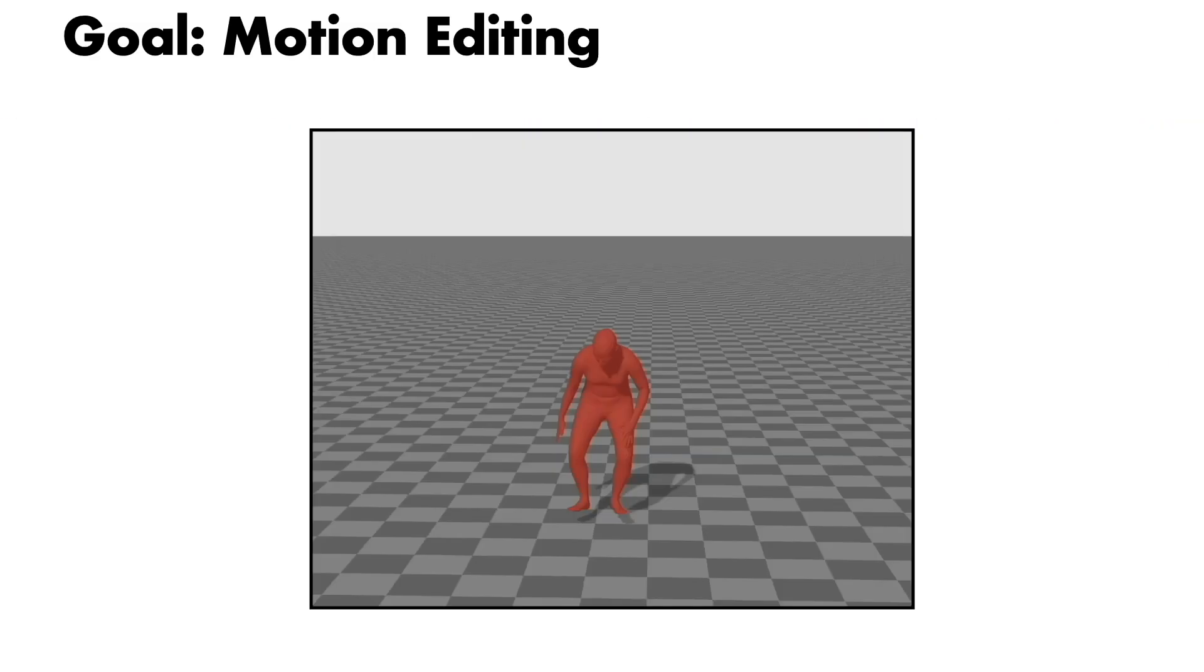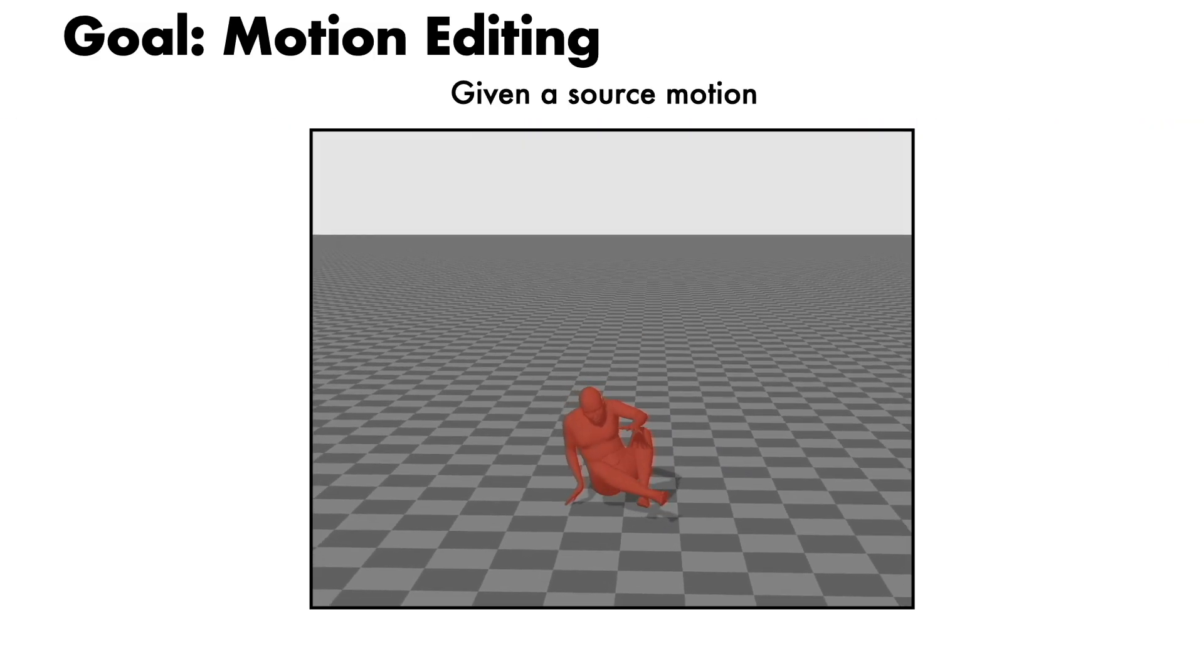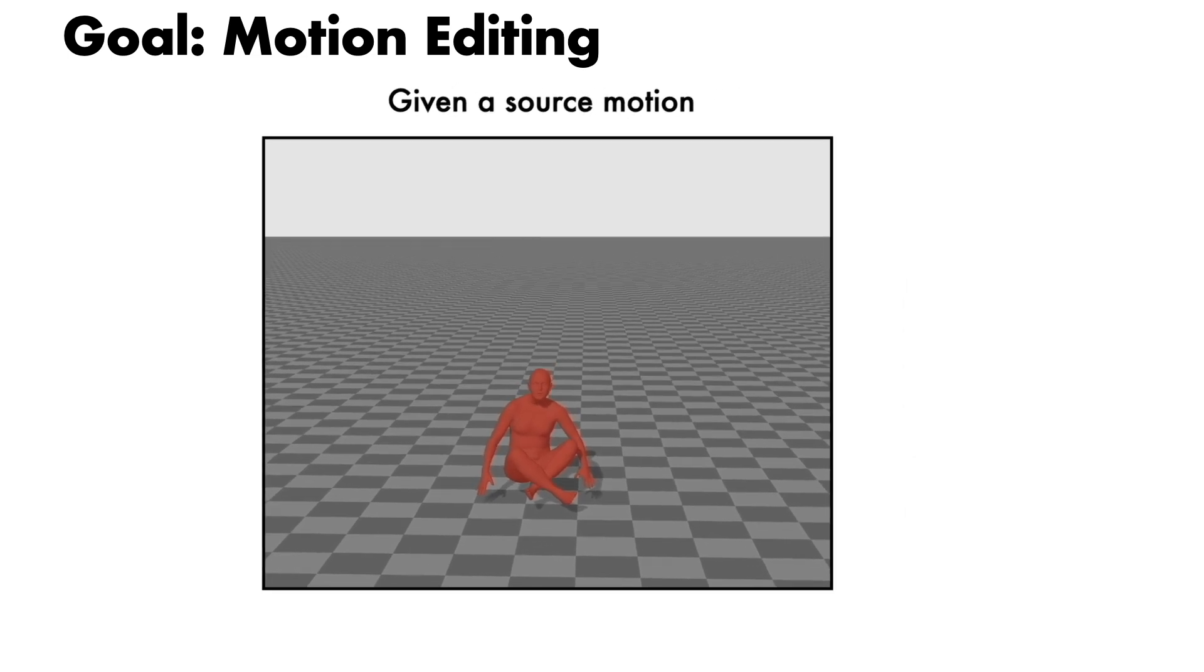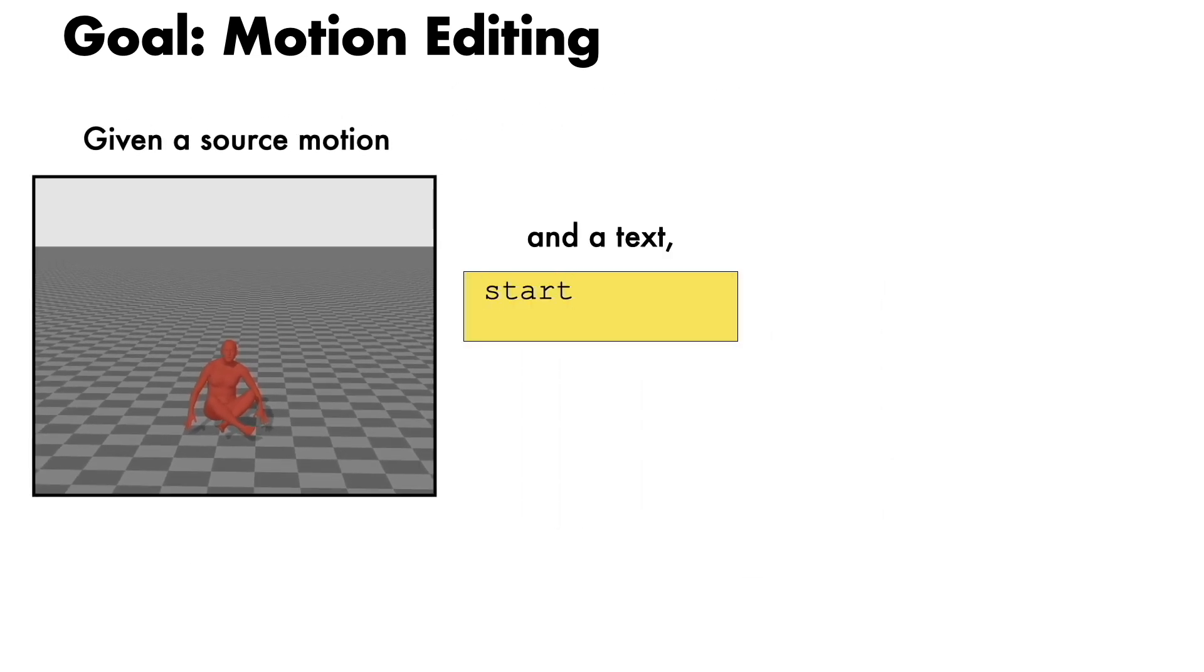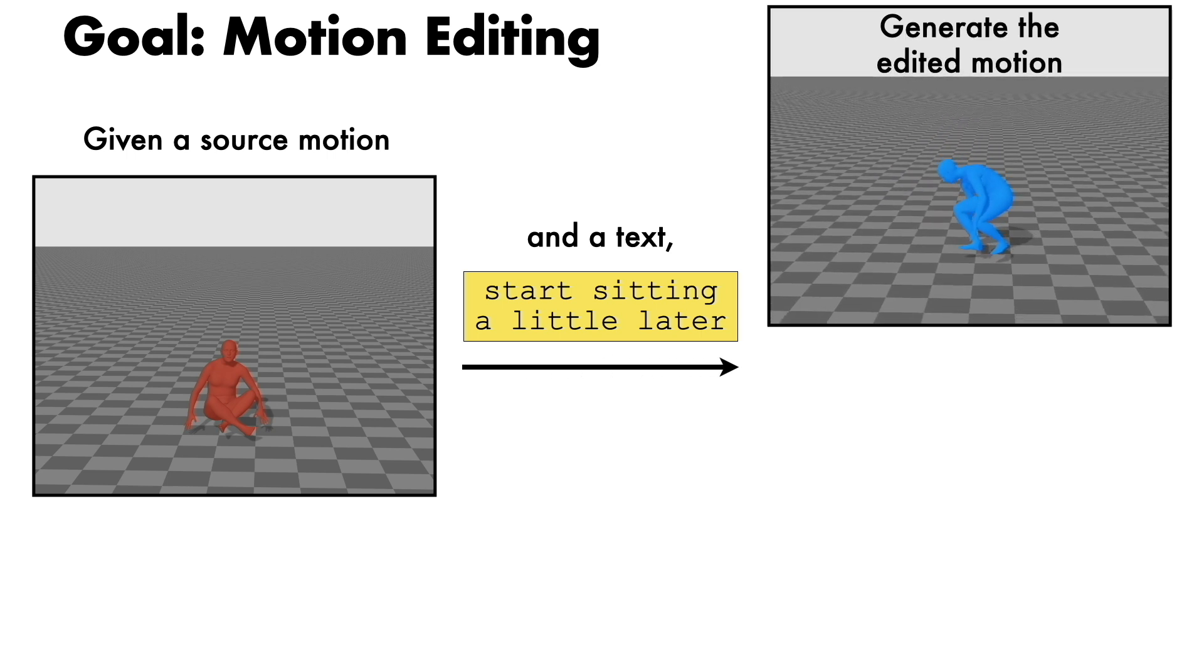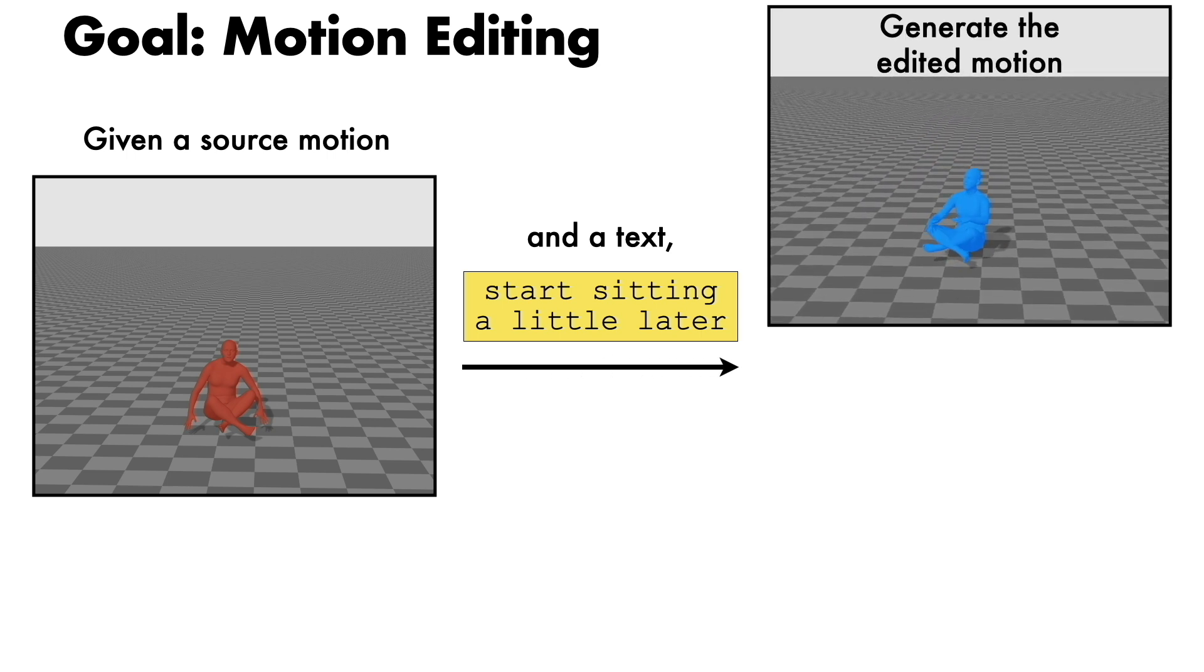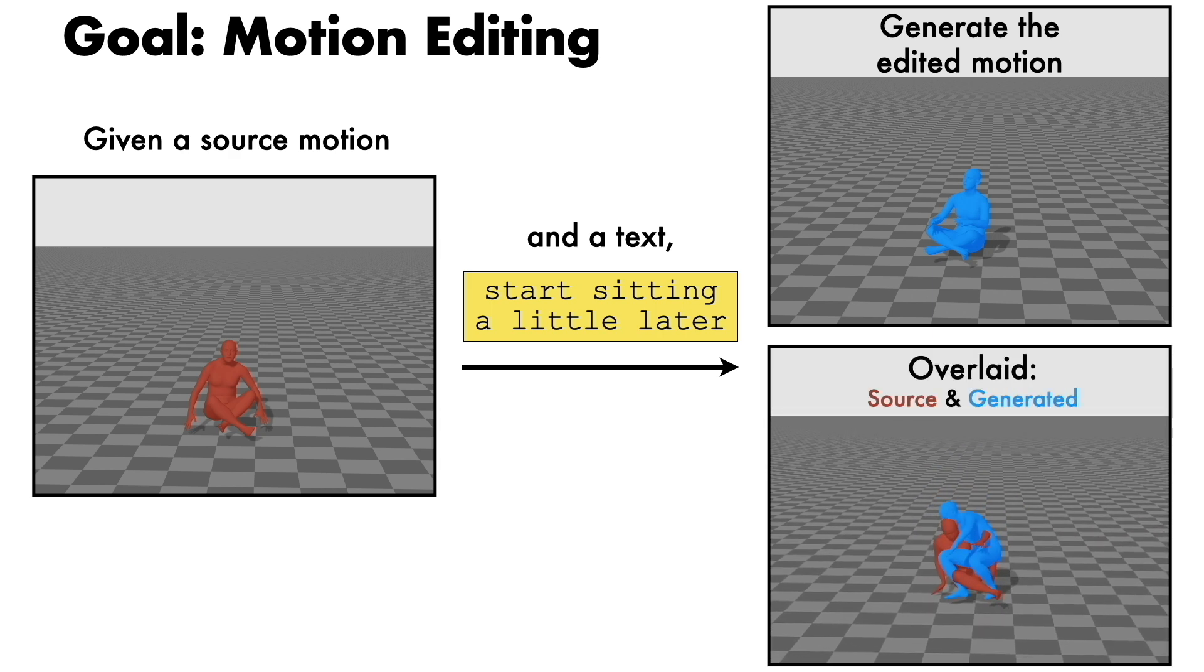In this work, given a three-dimensional human motion, which we refer to as source motion, and a text description that describes a desired edit to that motion, our goal is to generate the edited motion, which we refer to as the target motion.